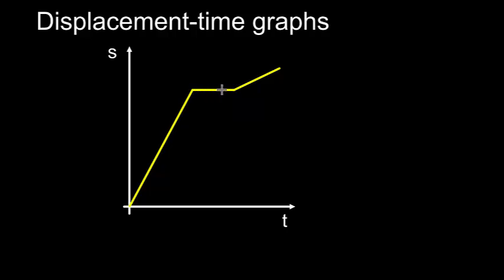In this section here, the object is not moving at all, because its displacement is not changing over time. And in this section here, the displacement is changing, but more slowly than previously, so it is travelling at a lower velocity.